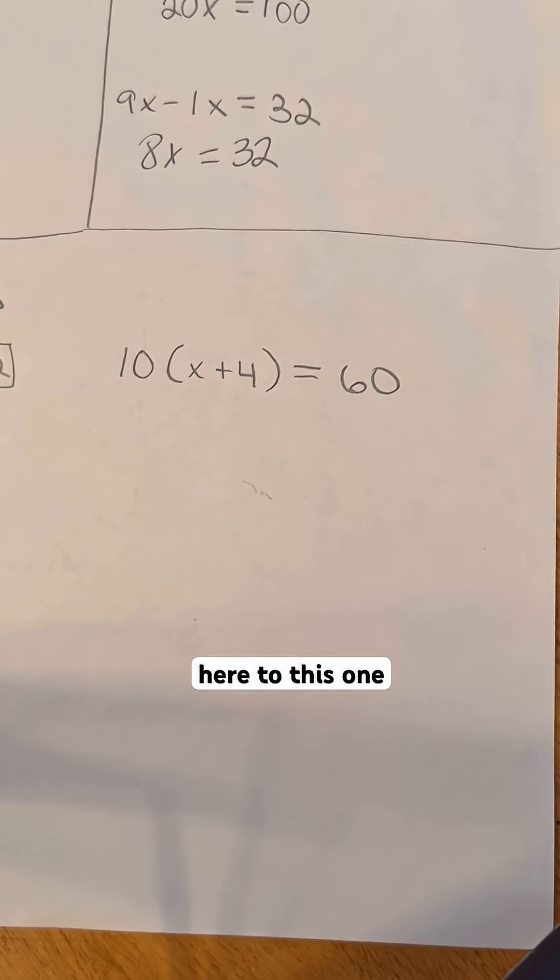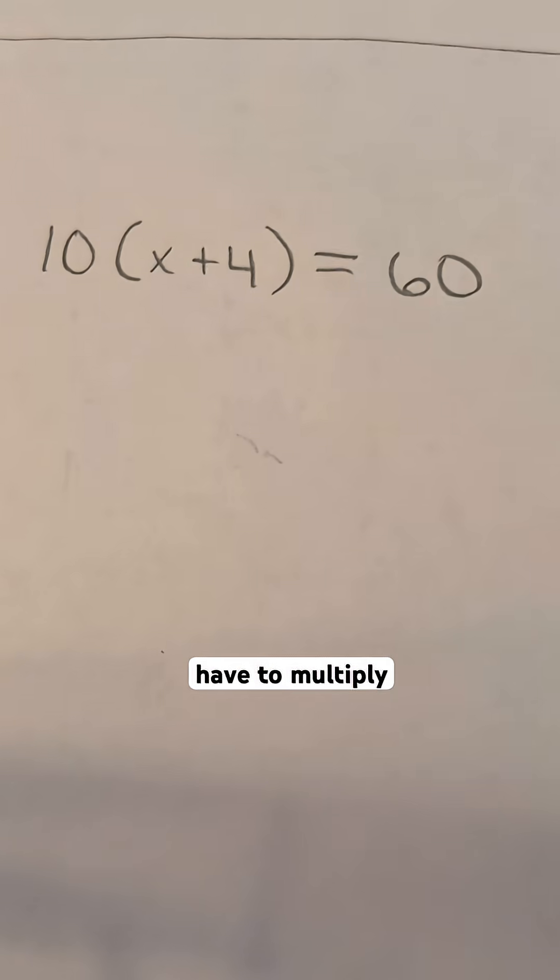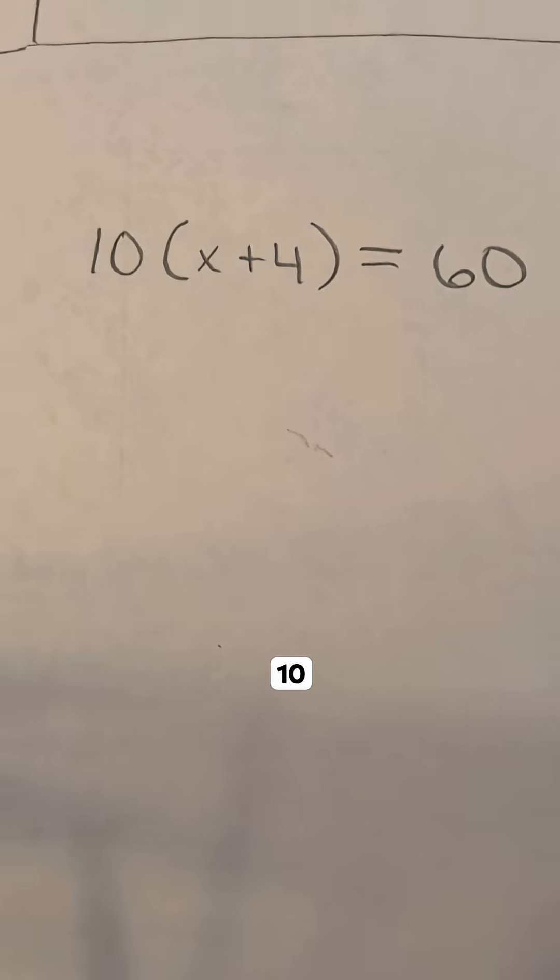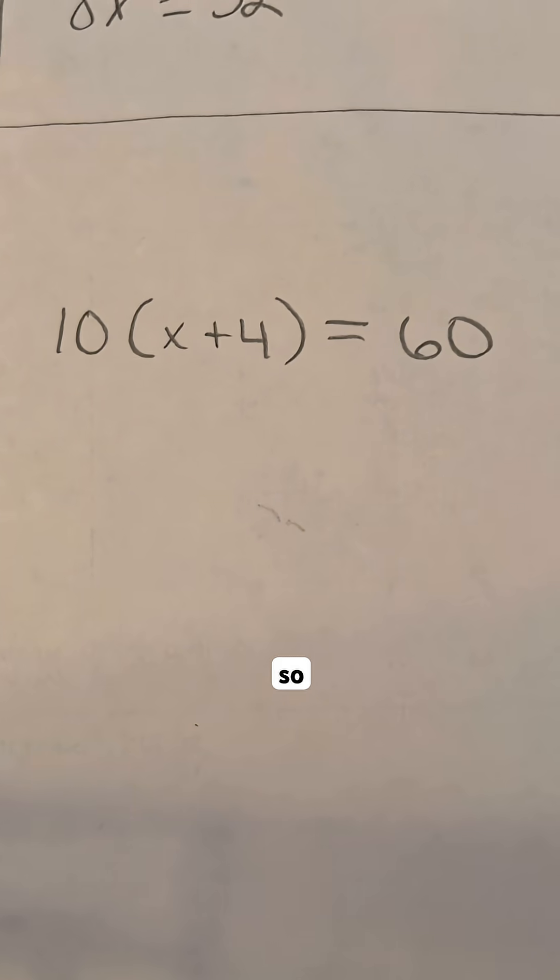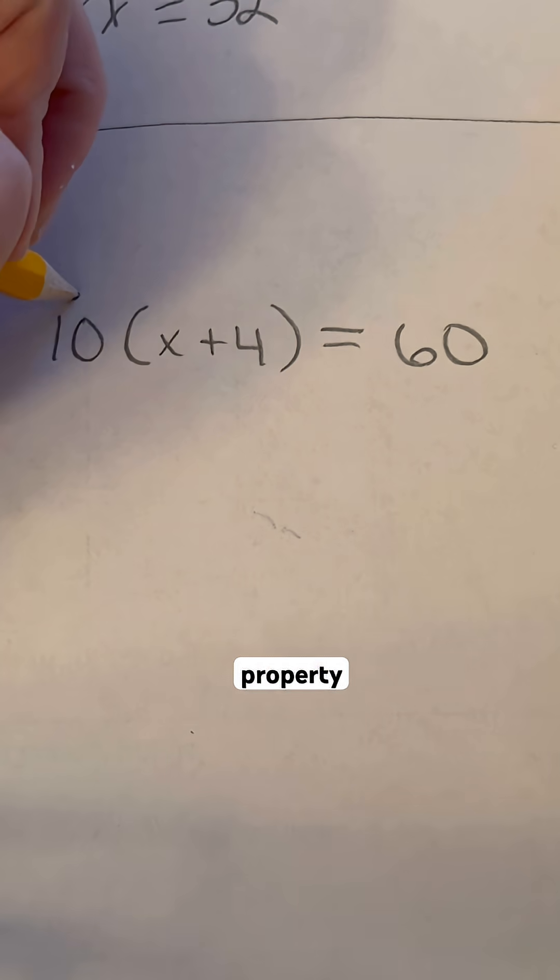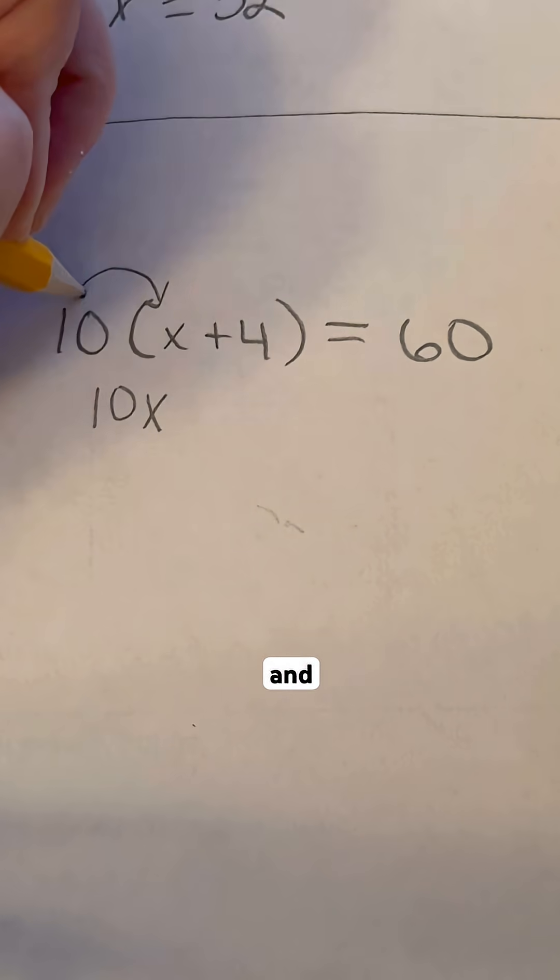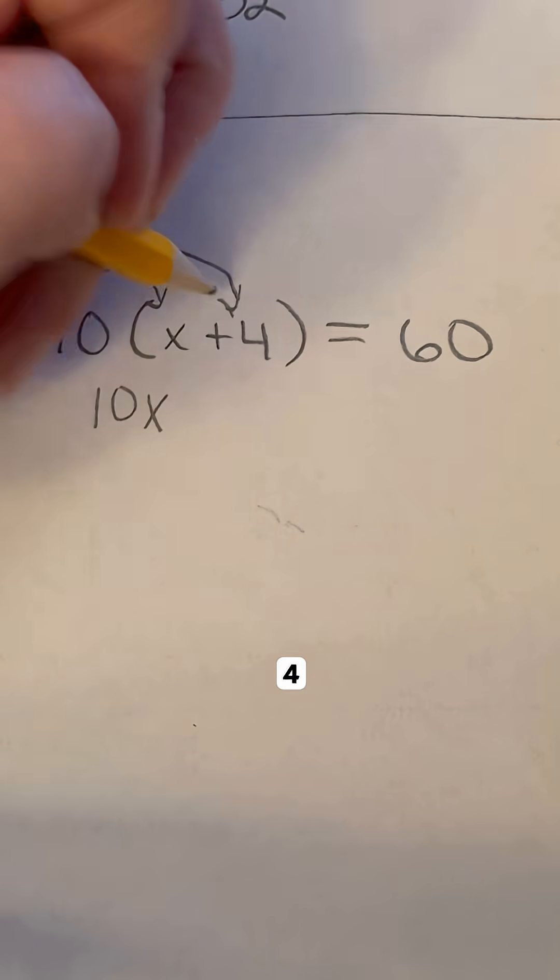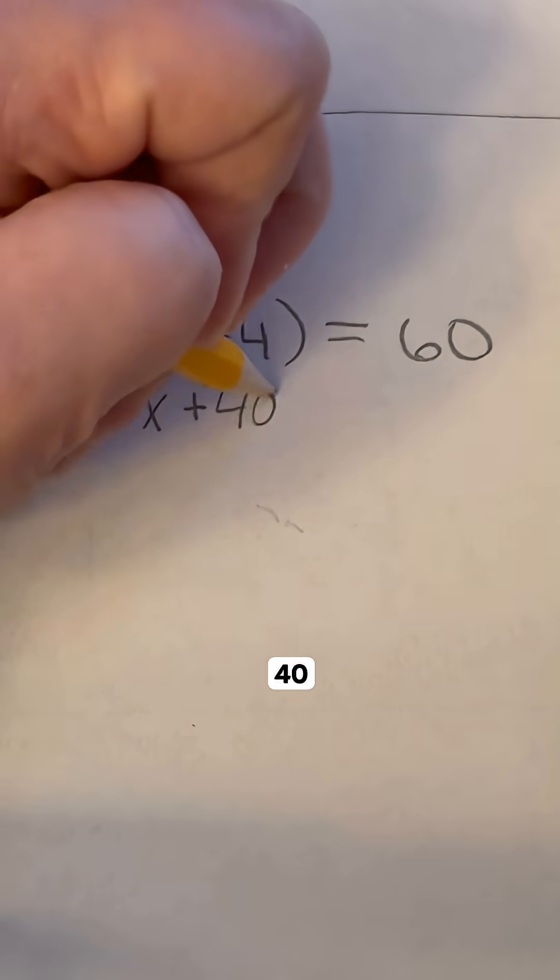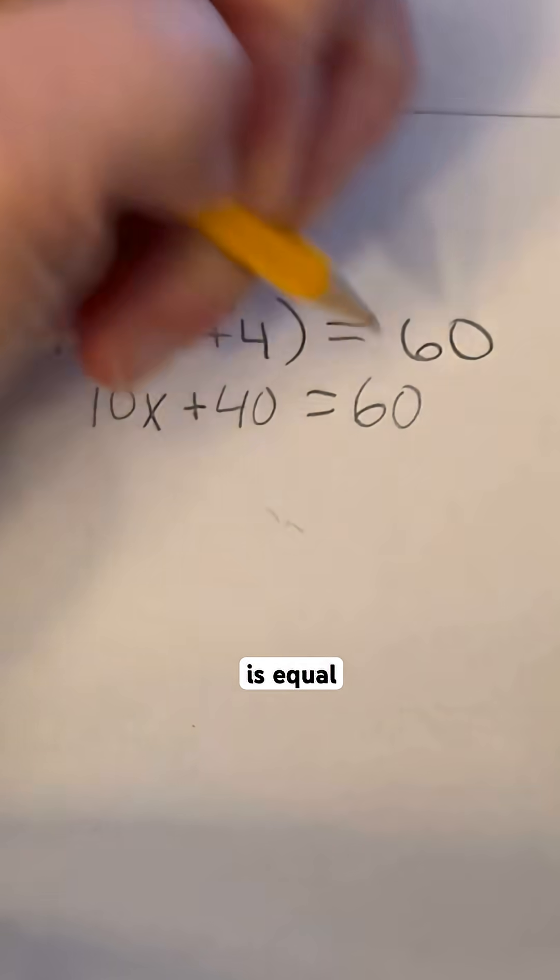Now we're going to go over here to this one. A little bit different. We do have to multiply because that is saying 10 sets of x plus 4. So what you're going to do is the distributive property. 10 times x is 10x, and then we do the same thing. 10 times 4, which is 40, and that is equal to 60.